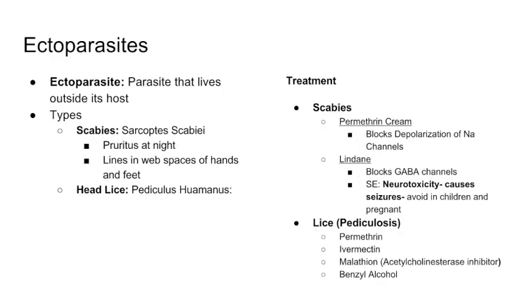The next subtopic is ectoparasites — parasites that live outside their host. There are two types: scabies and head lice. Scabies is caused by Sarcoptes scabiei, with symptoms of nighttime itching and burrow lines in the web spaces of the hands and feet. Head lice (pediculosis) is caused by Pediculus humanus.